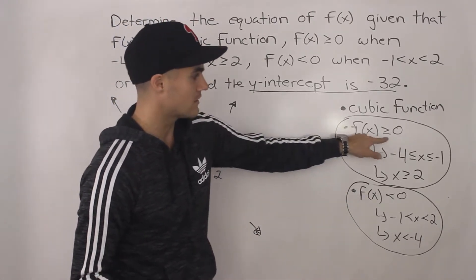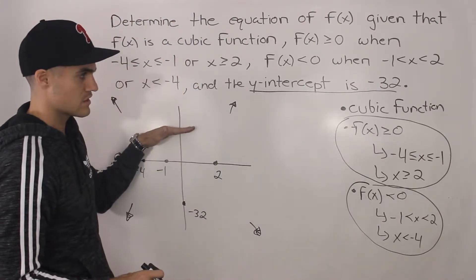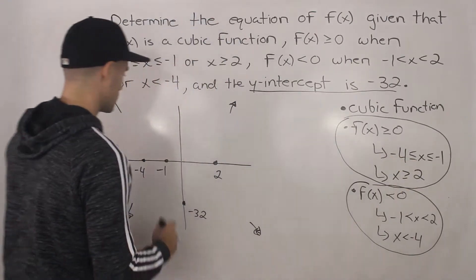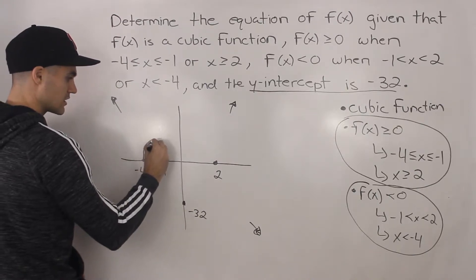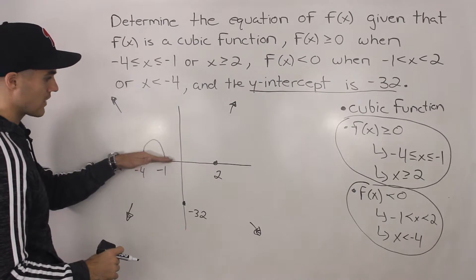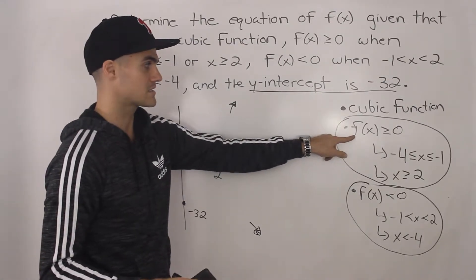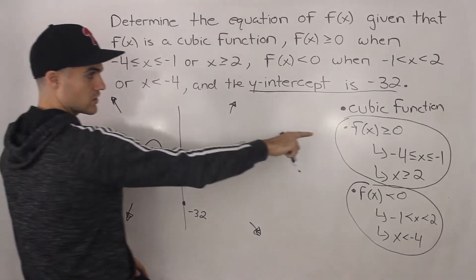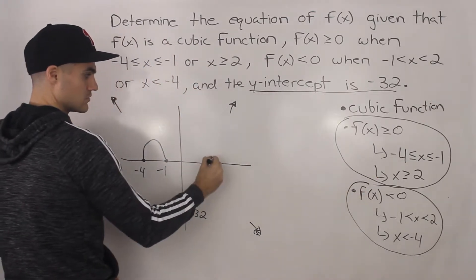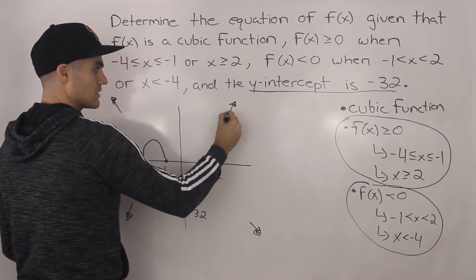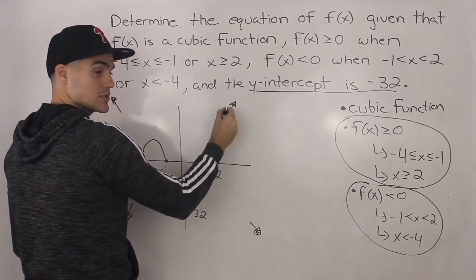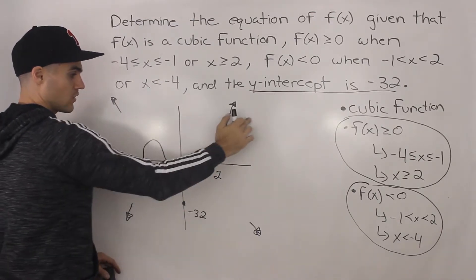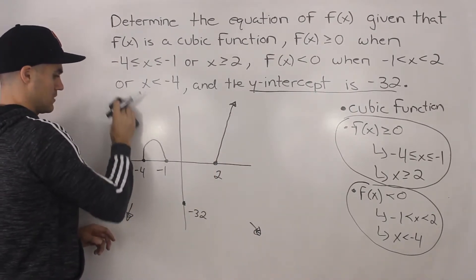f of x has to be greater than or equal to 0, meaning above the x-axis — the y-values have to be positive when x is between negative 4 and negative 1. So over here the function is going to look something like that. It's also going to be greater than or equal to 0 when x is greater than or equal to 2. So from that we can be fairly confident the end behaviors are from quadrant 3 to quadrant 1.